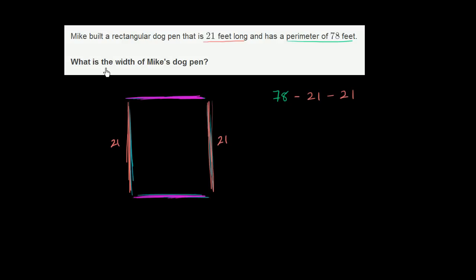And what's that going to be equal to? So that's 78 minus 42. And 78 minus 42, I don't want to make a careless mistake. 78 minus 42 is going to get me to 36. So this is equal to 36.